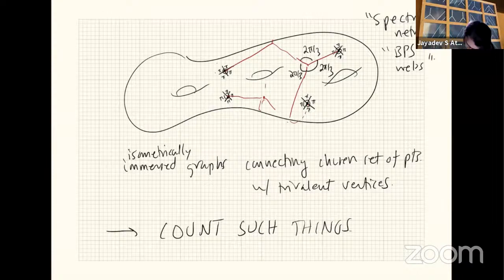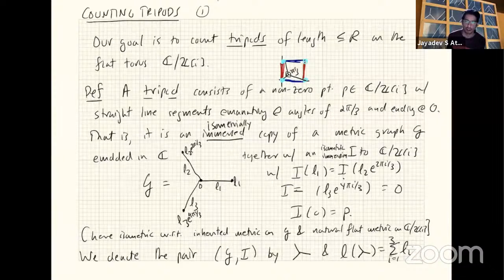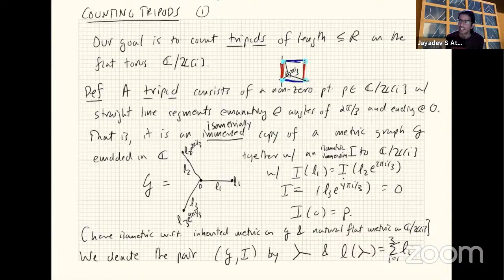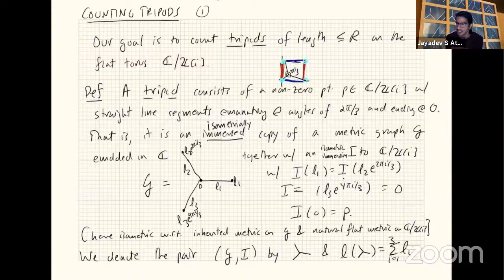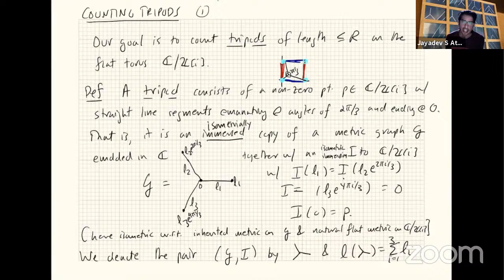That was all throat-clearing. We're going to restrict to the simplest possible compact flat surface — the torus, no singular points. Let's just take the square torus to make everything concrete. We're going to try and count tripods. We mark the point zero on the torus, and a tripod consists of a non-zero point P in the torus from which we shoot out straight line segments equally spaced at angles 2π/3, with all trajectories ending at zero.